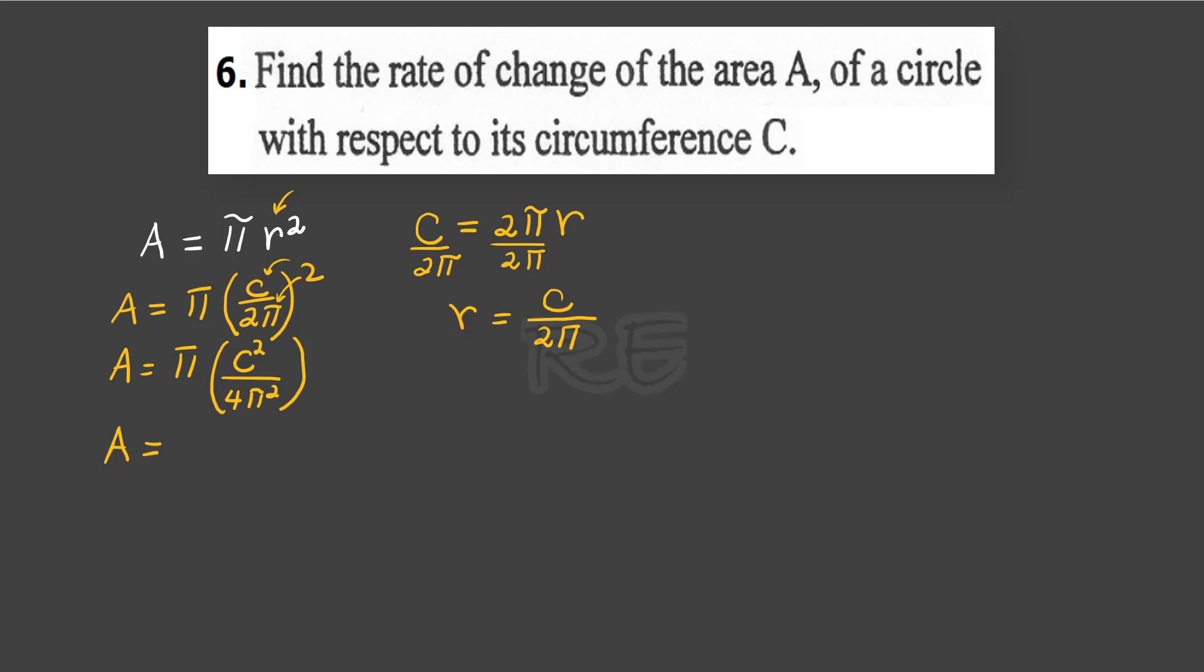When we cancel, pi over pi squared is 1 over pi. So it's 1 over 4 pi times C squared.